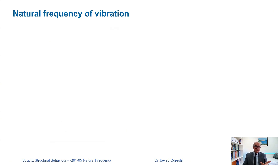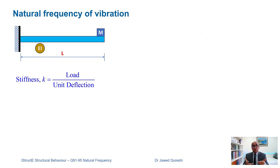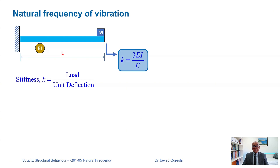The first question is: what is natural frequency? Imagine you have a cantilever beam — one side is fixed and on the other side a mass is applied. Stiffness is equal to load divided by unit deflection. There are standard formulas for these standard cases, but if you don't have a standard case, you simply draw the geometry of the structure, put it in software, and find out the deflection. Once you have the deflection, you can find out the stiffness because you already have the load applied. The stiffness formula is 3EI over L³ for a cantilever beam with a point load applied at the end.